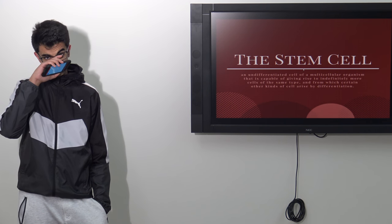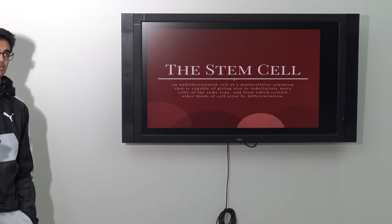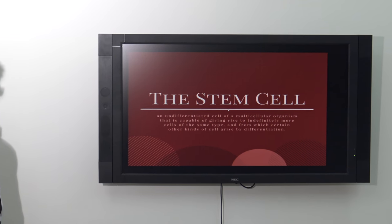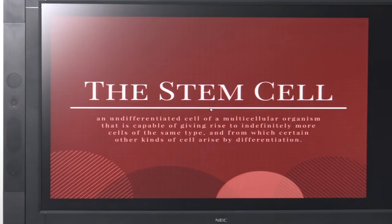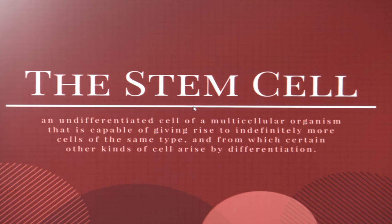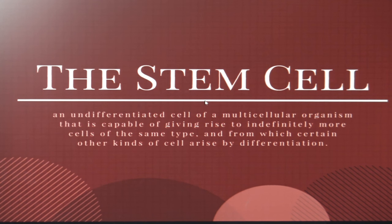A stem cell is a cell which can give rise to multiple different cell lines depending on if it's pluripotent, multipotent, or omnipotent, and that impacts how many different cells they can differentiate into. Basically, it's just one cell that can become different things. What I'm focusing on specifically is how stem cells can help treat burn victims.